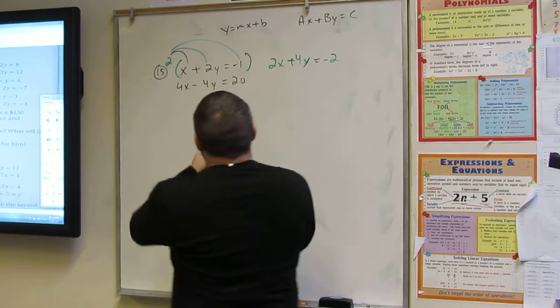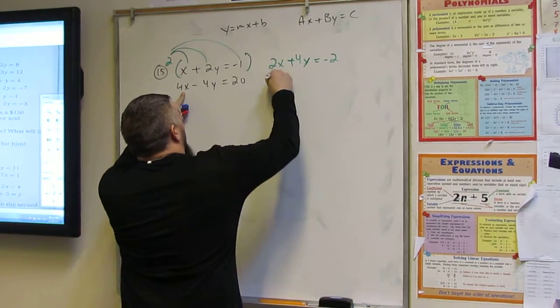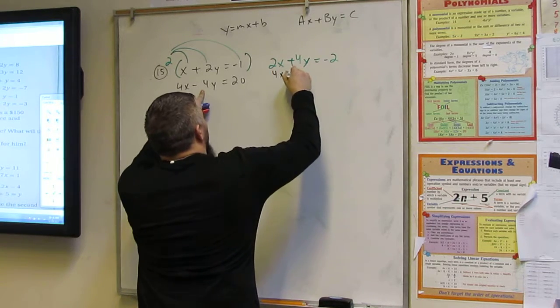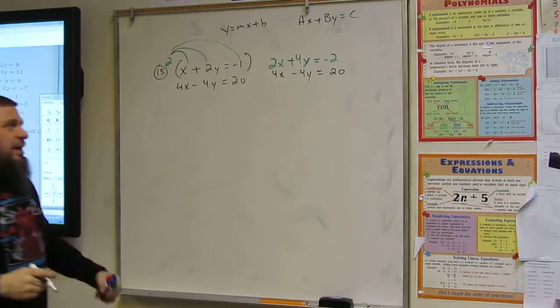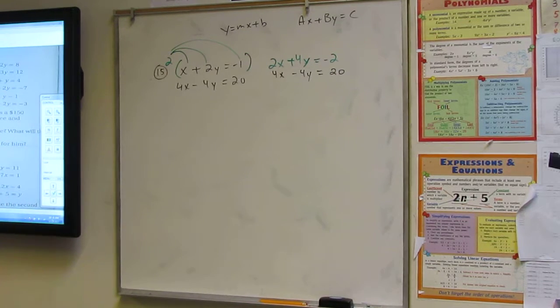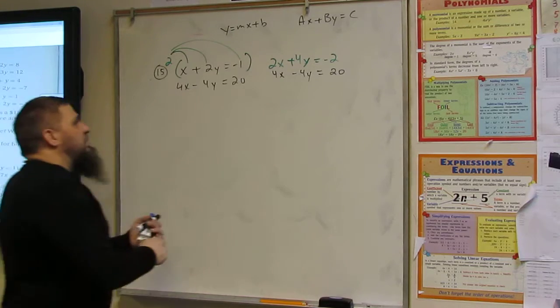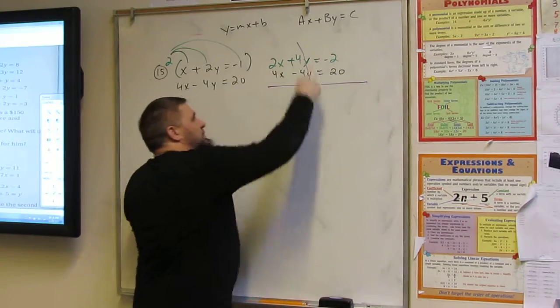Four X minus four Y equals 20. Now what are we going to do? The lowest X. We just add them. Boom.